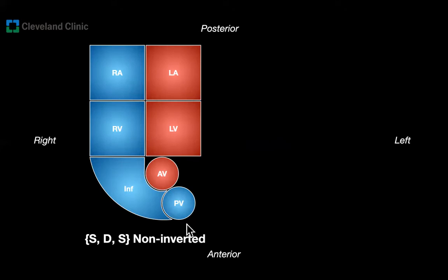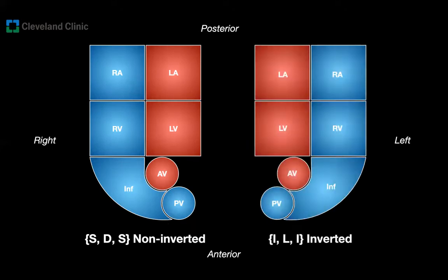Of course, if there is non-inverted, there must be inverted. ILI is also considered normal — it is just a mirror image of SDS, typically seen in people with situs inversus totalis, and many of them have no other cardiac congenital defects. This is — sorry for the quirky joke — Samuel L. Jackson on the left and Samuel D. Jackson on the right. Still normal, right? SDS and ILI — both are normal.